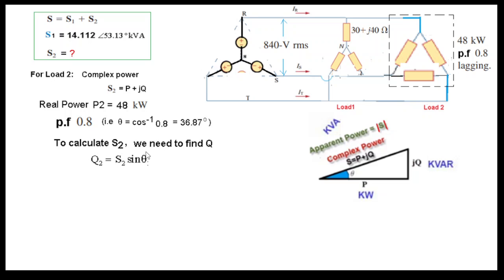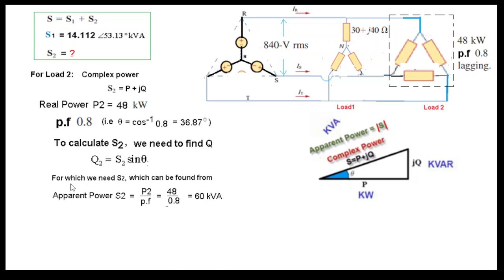Power factor 0.8 means theta equals cos inverse of 0.8, so the angle is 36.87 degrees. To find S2 we use the relation: S2 equals P2 divided by power factor. The real power is 48 kW and the power factor is 0.8, therefore S2 equals 60 kVA. Remember that S2 multiplied by power factor equals P2, or S2 times cos theta equals P2.